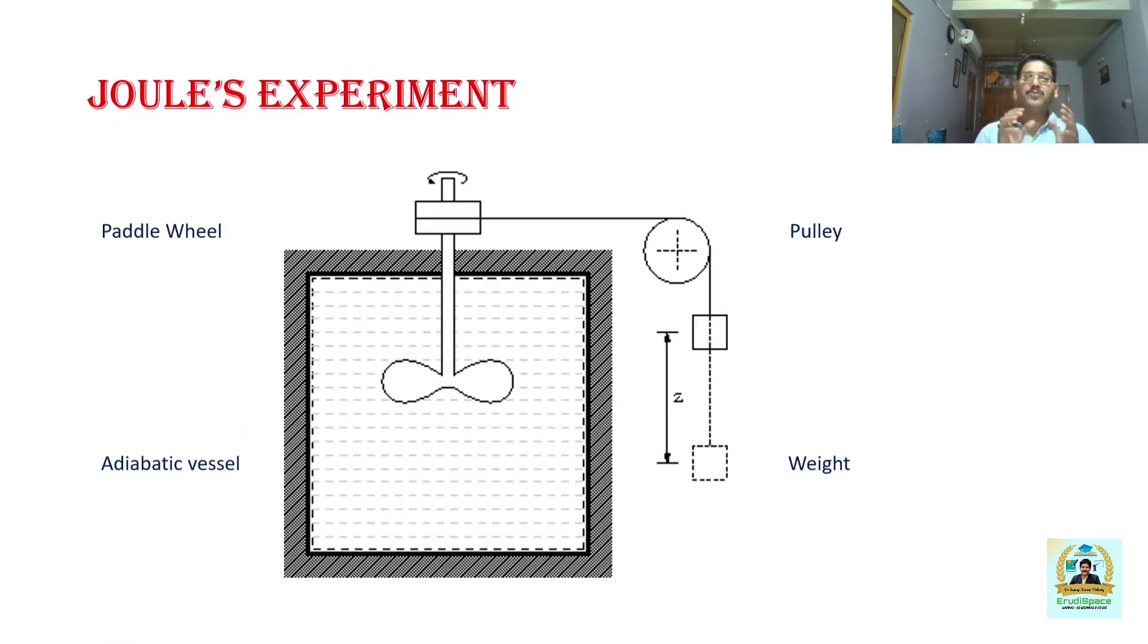Now we will come to the Joule's experiment which actually gave this relationship between the work transfer and heat transfer and introduced the mechanical equivalent of heat. What he has done: he has taken an adiabatic vessel which does not allow any form of heat interaction to take place with the surrounding. A known quantity of water has been taken. The temperature at the initial condition was measured. Then by means of a paddle wheel, some work was done upon the system. The work done upon the system can be calculated by fall of weight. You can see the weight-pulley-paddle wheel arrangement here.